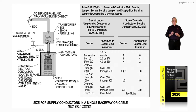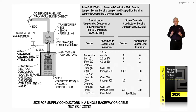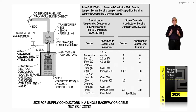Notice here we list the system bonding jumper. Now, if that transformer was located outside and that was service equipment, instead of being identified as a system bonding jumper, it would be identified as a main bonding jumper. But since it's a separately derived system, this system bonding jumper is addressed in 250.30A1(a), and it's sized based upon Table 250.102C1.